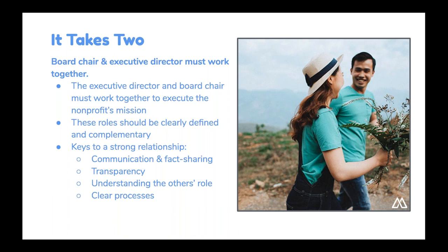The board chair and the ED are the pillars at the head of the org, and they must work together to carry out the mission. These roles need to be clearly defined — the executive director is responsible for managing staff and day-to-day operations, and the board chair is responsible for managing the board, high-level strategic planning, and overseeing the financial situation. To paraphrase Ghostbusters, you should never cross the streams. The key parts of a successful partnership between an ED and board chair are communication, fact-sharing, transparency, respect for each other's role, and clear processes.